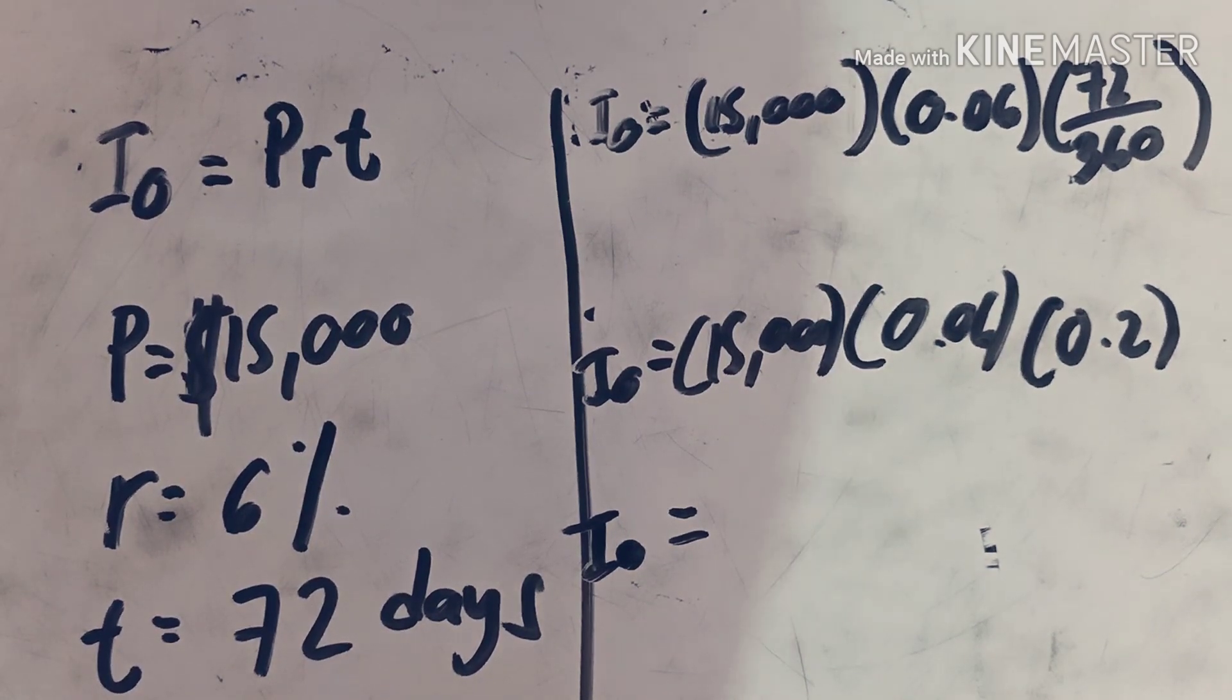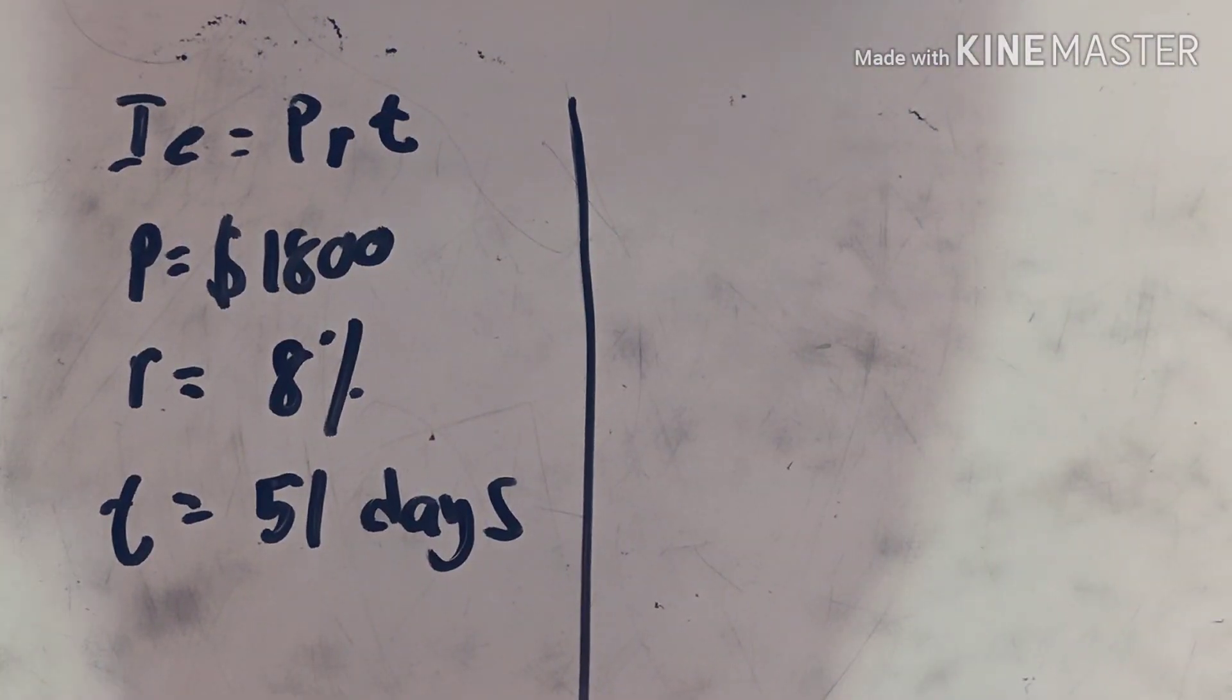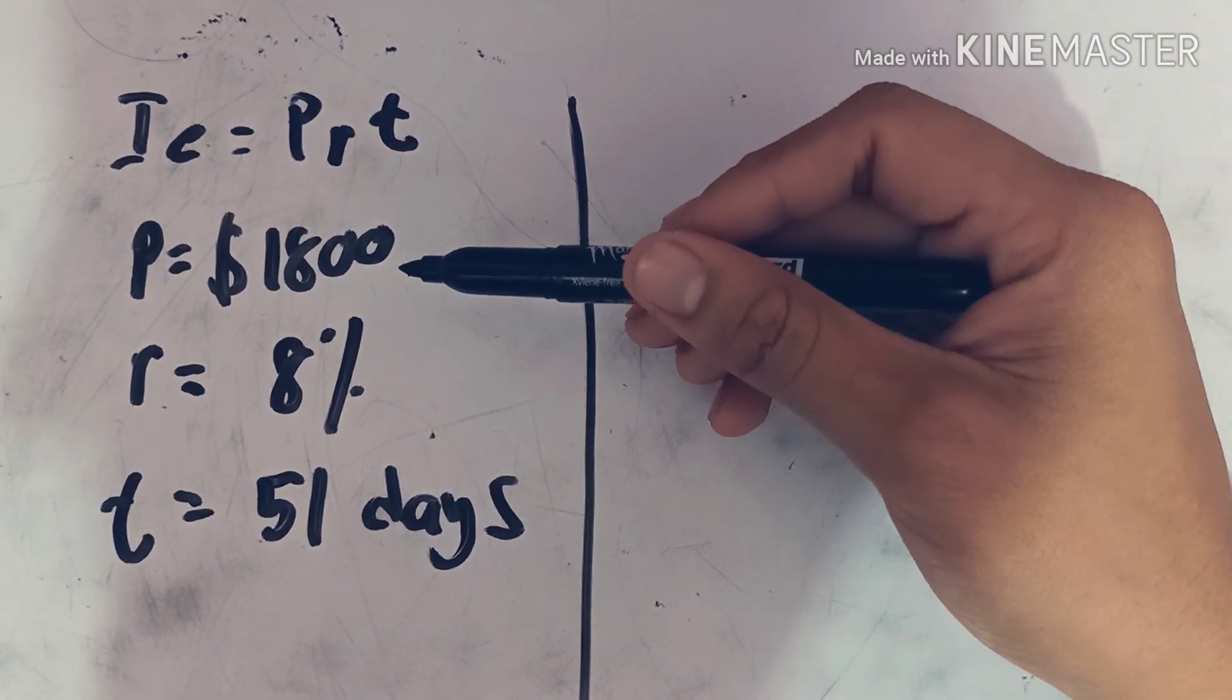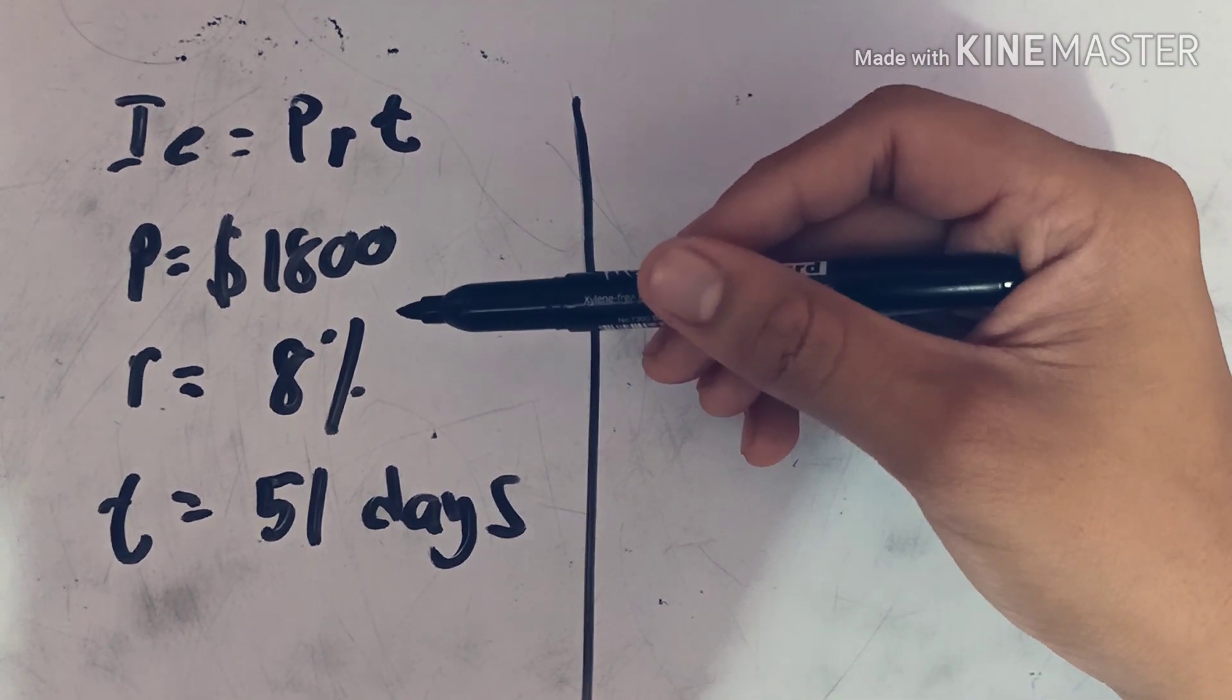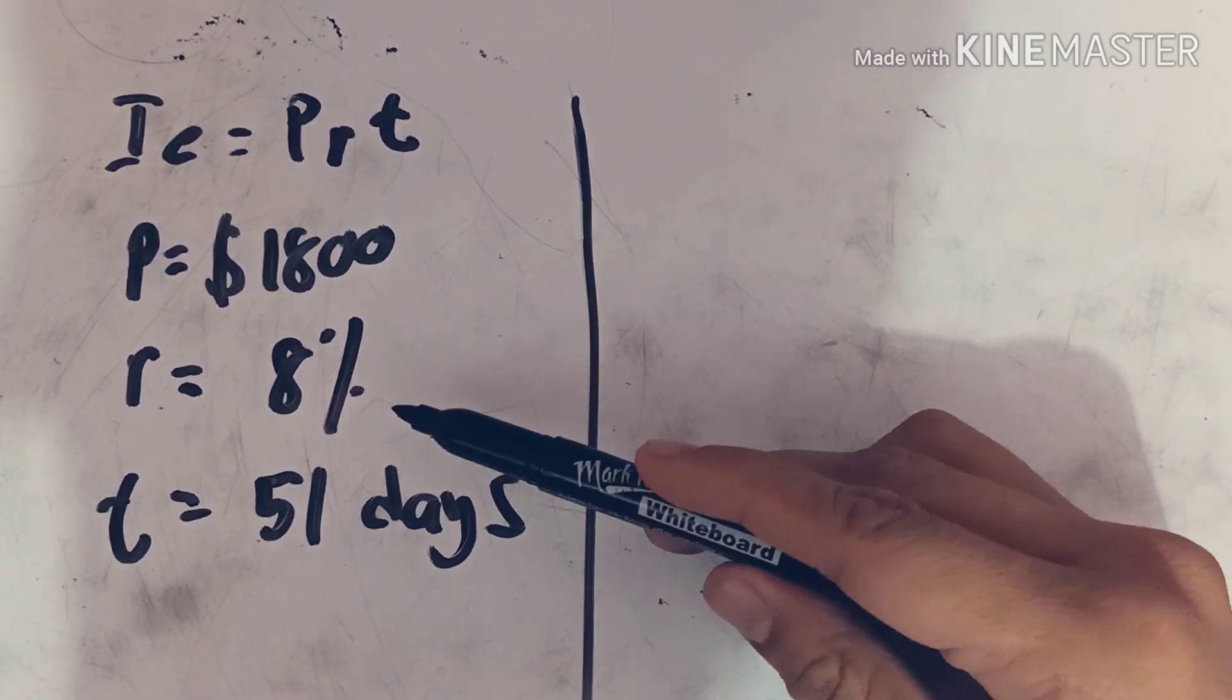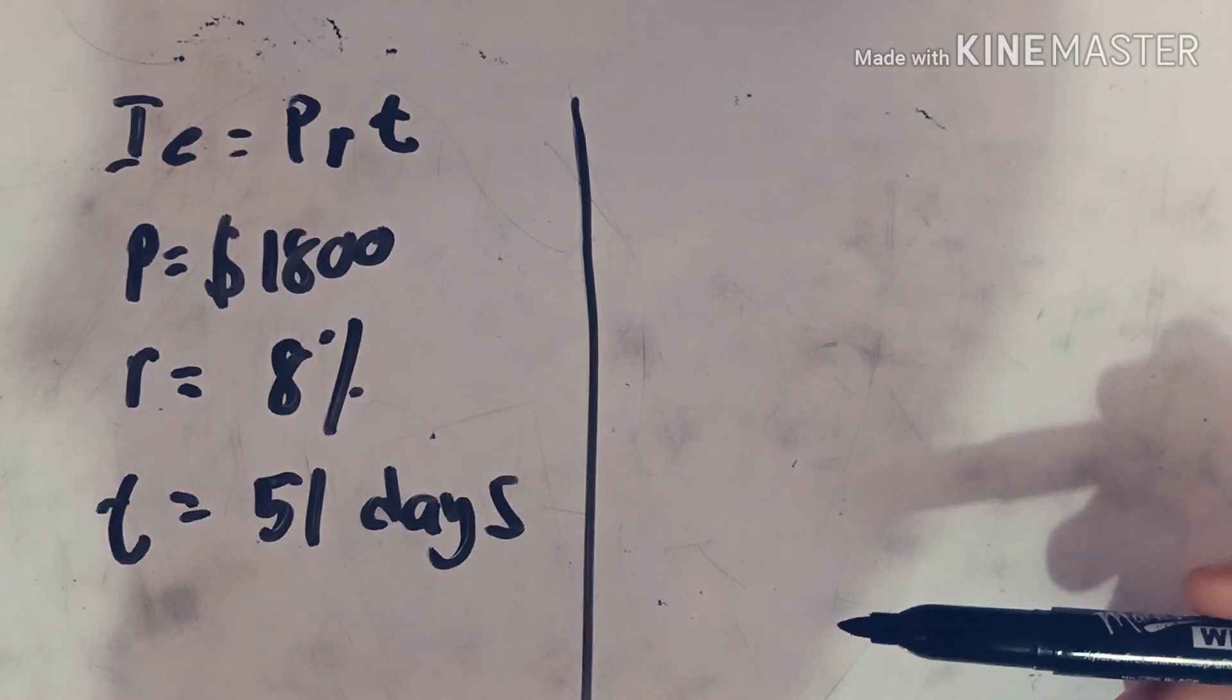Now let's have another example by finding the exact interest. Let's say JR borrowed $1,800 from his uncle. He promised that he will pay his uncle after 51 days at 8% interest. Now let's find the exact simple interest to be paid by JR.